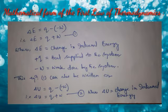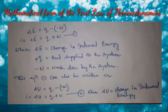The mathematical form of the first law of thermodynamics is: ΔE = Q − (−W). After simplification, it becomes ΔE = Q + W. Let us name this as equation number 1.